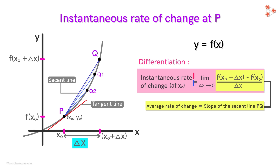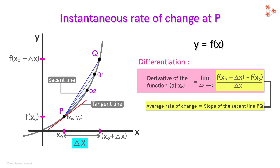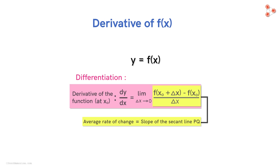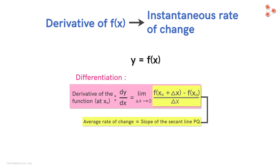Instead of saying the instantaneous rate of change in y with respect to x at x₀, we say that the derivative of the function at x₀ is this value. The derivative is usually denoted by the symbol dy/dx. The derivative of the function at a particular value of x is its instantaneous rate of change at that point. In the next lesson, we will further explore the concept of derivatives — how to exactly find the derivative for a particular function, and what this symbol means intuitively.